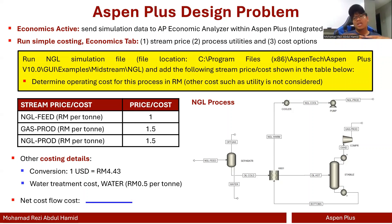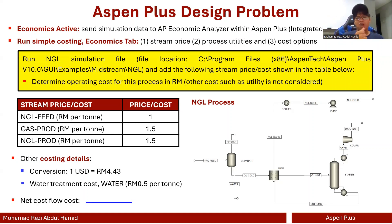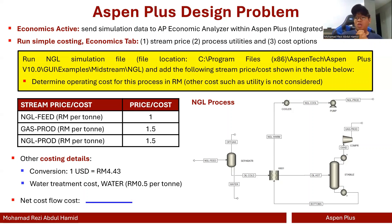What integrated economics does is it allows you to do a lot of things — for example, technical economic evaluation, anything related to project management, full economics evaluation, costing, mapping, sizing, and all of those kinds of things. But what I'm trying to do right now is just simple costing without activating the economics active feature.